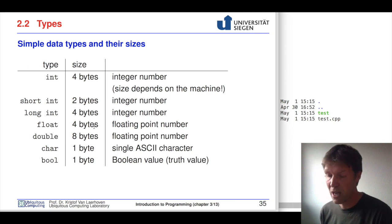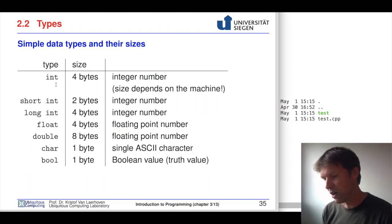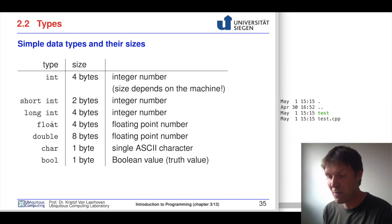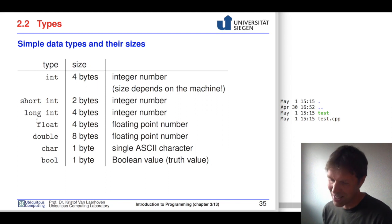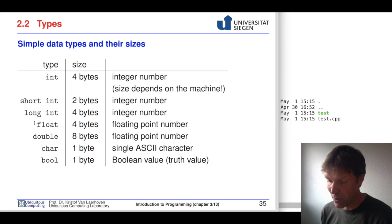A float is also four bytes, but the way those four bytes are interpreted is completely different. For an integer we count starting at zero, one, two; for a float it's organized differently — we'll see more on that later. For now, think of it as four bytes designed to hold a floating point number. A double is the same but double the size, hence the name, and can hold bigger or more precise numbers — including digits behind the decimal point.